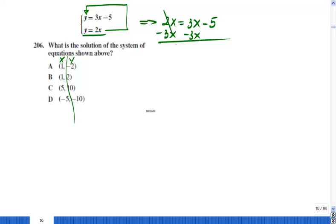2X minus 3X is 1. Negative X equals 3X minus 3X is 0. Negative 5.